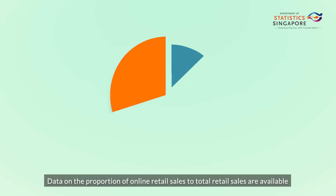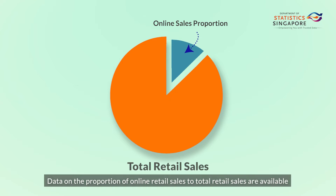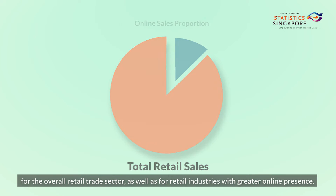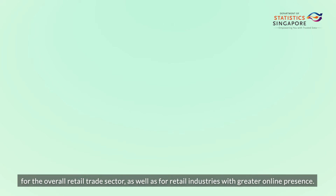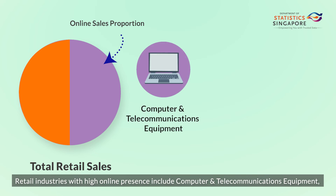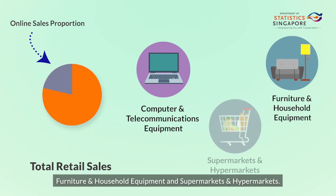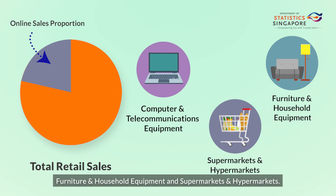Data on the proportion of online retail sales to total retail sales are available for the overall retail trade sector, as well as for retail industries with greater online presence. Retail industries with high online presence include computer and telecommunications equipment, furniture and household equipment, and supermarkets and hypermarkets.